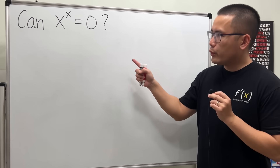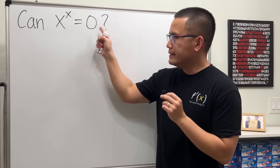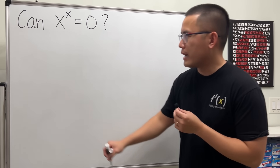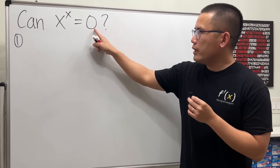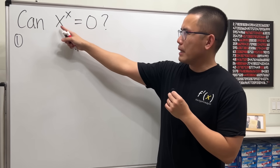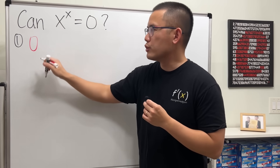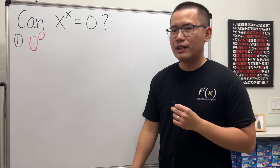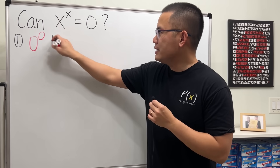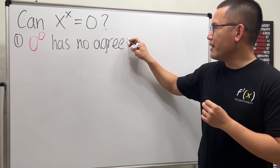Today I want to discuss this equation: can x to the x power equal zero? First, it looks like if we want to end up with zero on the right-hand side, we should use zero for the base. But because this is x to the x power, if we have zero for the base that means we also have zero for the power. Unfortunately, when we have zero to the zero's power, this has no agreement.